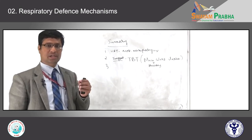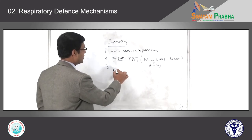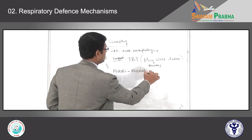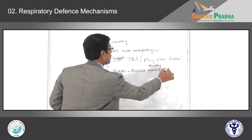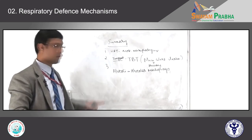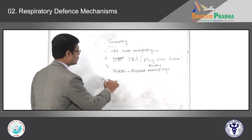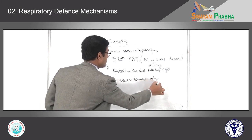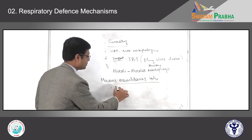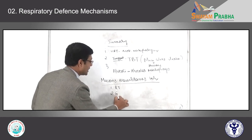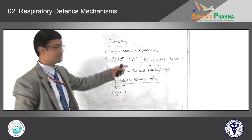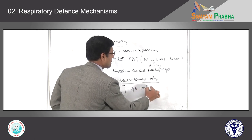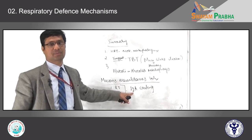The small minute particles that enter directly into the alveoli are cleared by alveolar macrophages. Along with these three protective mechanisms, all mucous membranes in the body — most importantly the respiratory tract and gastrointestinal tract — also have IgA immunoglobulin coating on the surface, which is another important defense mechanism.